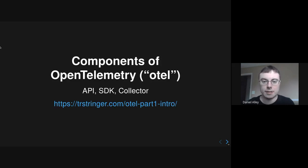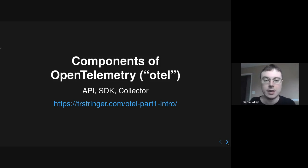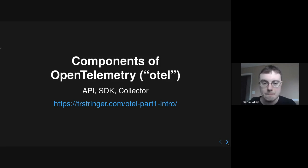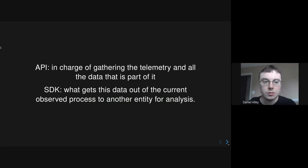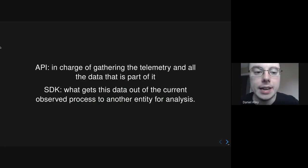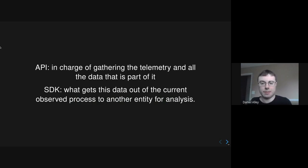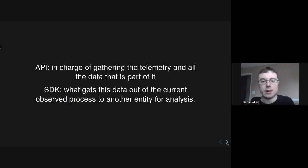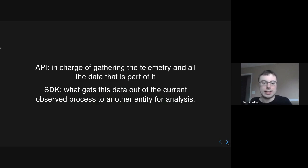Components of OpenTelemetry — also frequently abbreviated as OTEL — include the API, SDK, and the collector. The API is in charge of gathering telemetry and all the data that's part of it. This is user instrumentation — you have to add this to your code. The developers use the API to add instrumentation to their code.